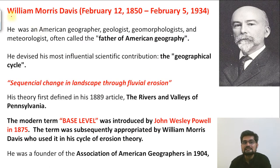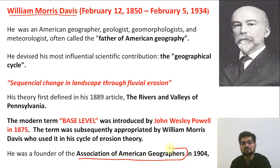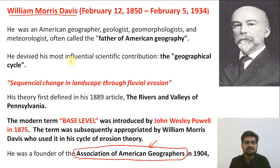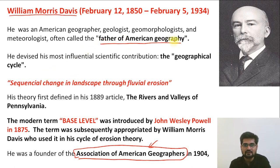The first scholar who made the greatest contribution in terms of making the Association of American Geographers and establishing the School of Geographical Thought in America is William Morris Davis. He is also considered the father of American geography because he established the school of geographical thought in America.